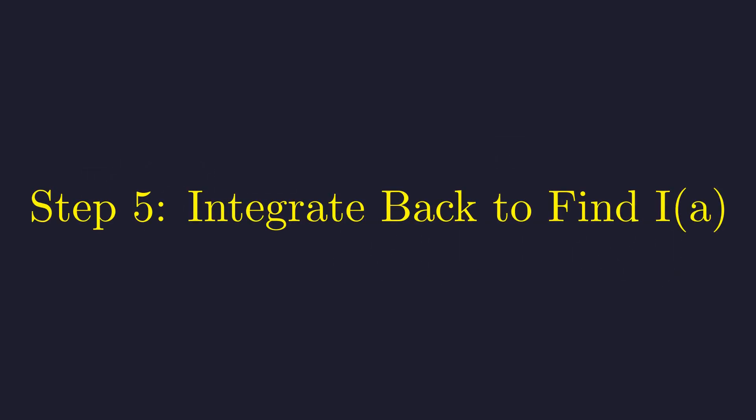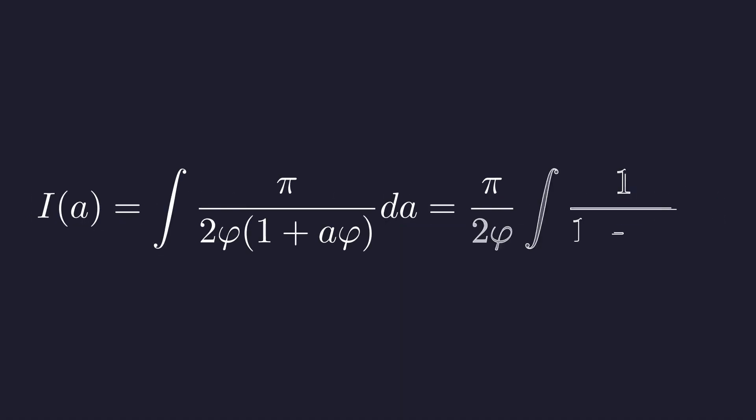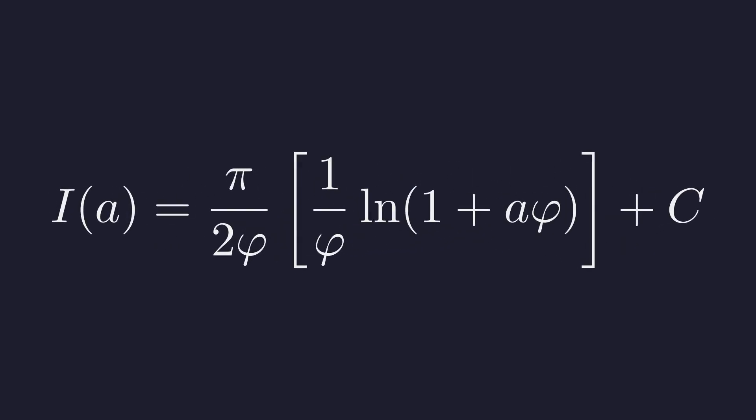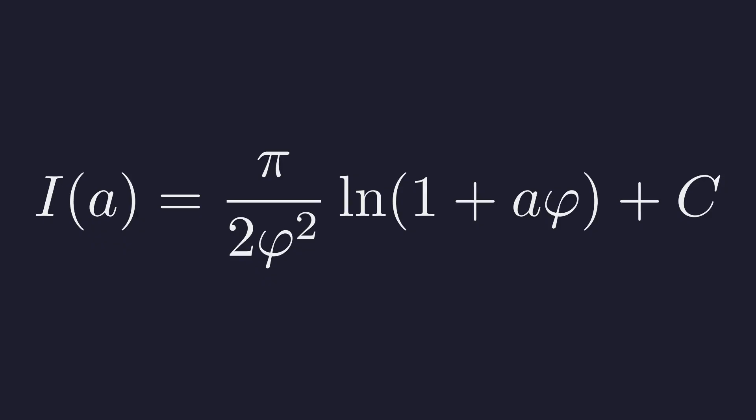Now we integrate this expression with respect to A to find our original function I of A. This is a straightforward natural logarithm integral. The integral of 1 over 1 plus A phi is 1 over phi times the natural log of 1 plus A phi, which simplifies to pi over 2 phi squared times the natural log, plus our constant of integration C.